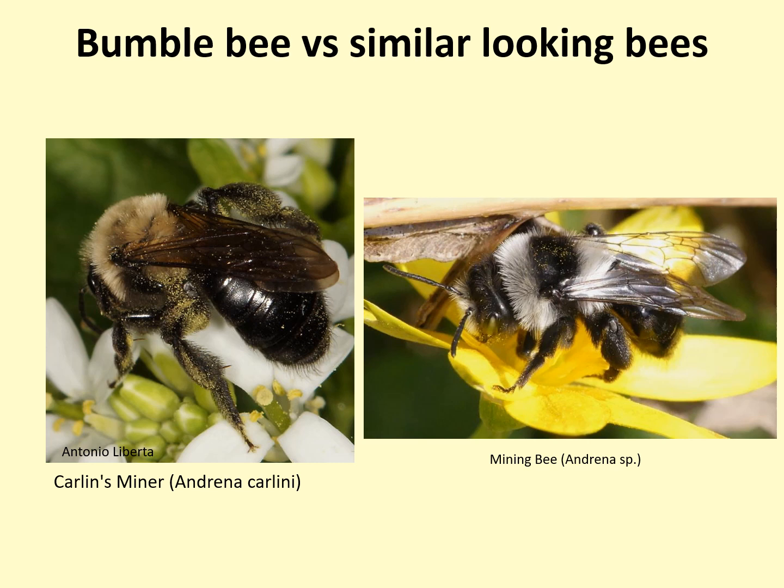Andrenid bees, often called miner or mining bees, can also be confused with bumblebees. Andrenids tend to be smaller, with a shiny abdomen, and they have what is called the scopa — a structure for carrying pollen with many long hairs all along their hind legs — instead of a corbicula like a bumblebee.